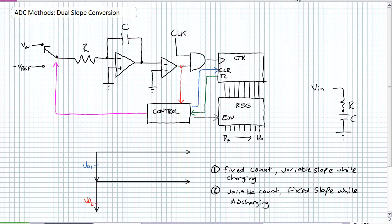The dual slope conversion is also my favorite method of analog-to-digital conversion because it doesn't use a lot of hardware, and it gets major extra points because it's using existing hardware we've already discussed in a pretty cunning fashion to make things happen. Yes, it takes a little bit longer and it's not as simple to understand as flash, but it makes use of some very limited resources to make this thing happen.